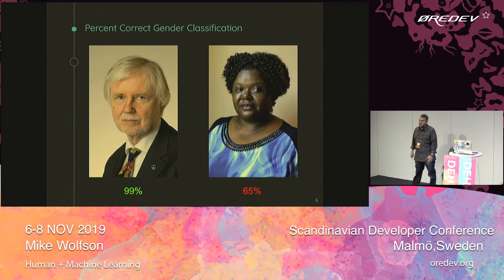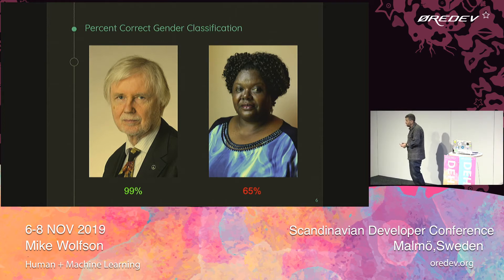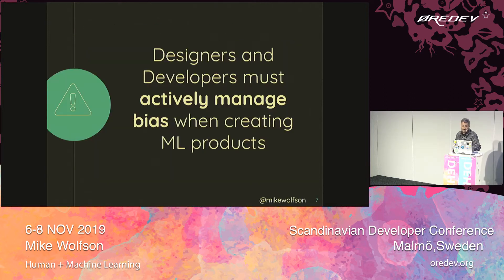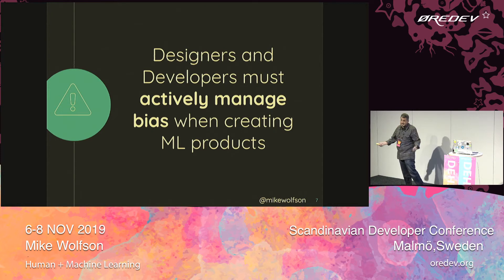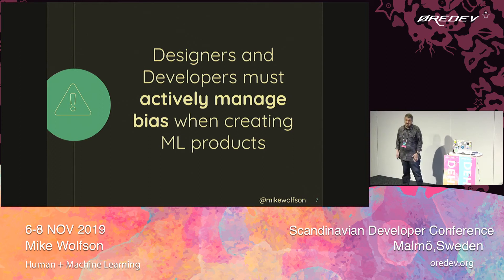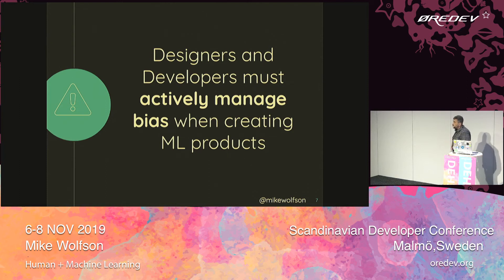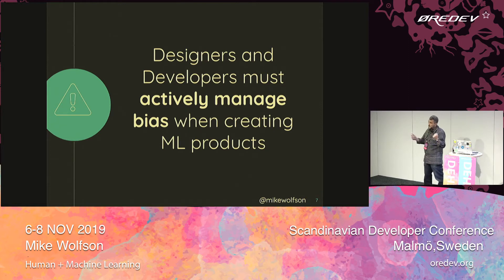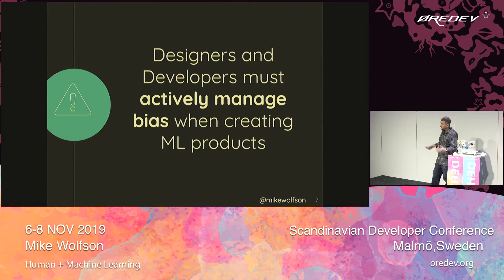We can talk about all sorts of issues that could come up based on racial and gender classifications being done incorrectly — there can be all sorts of different challenges. The message I want to share is that designers and developers must actively manage bias when creating machine learning systems. It's not enough to just know about the bias; we have to put in steps and systems that actively manage it to ensure we're not creating algorithms that don't do what we expect.